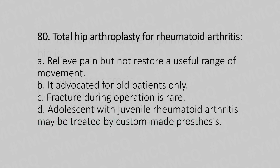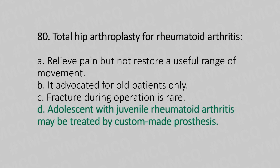Now let's move to question number 80. Total hip arthroplasty for rheumatoid arthritis: Option A, Relieves pain but does not restore the usual range of movement; Option B, Is advocated for old patients only; Option C, Fracture during the operation is rare; Option D, Adolescents with juvenile rheumatoid arthritis may be treated by custom-made prostheses. And the answer is Option D, Adolescents with juvenile rheumatoid arthritis may be treated by custom-made prostheses.